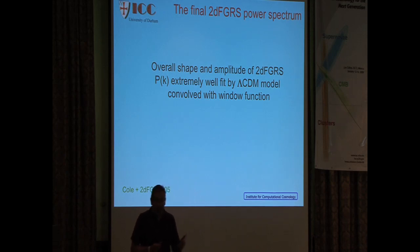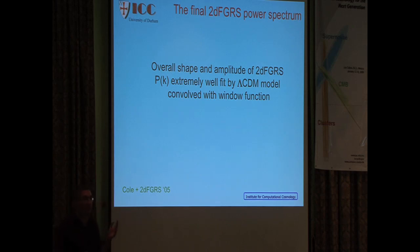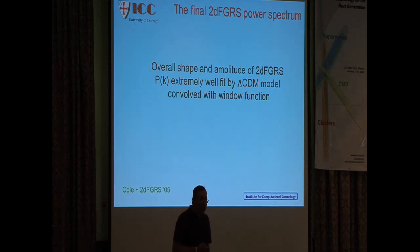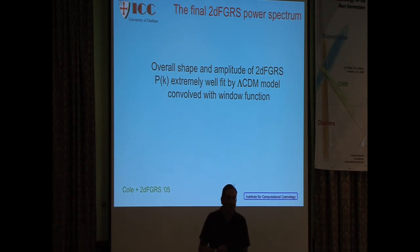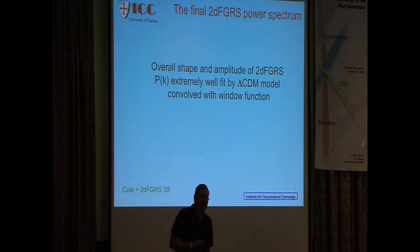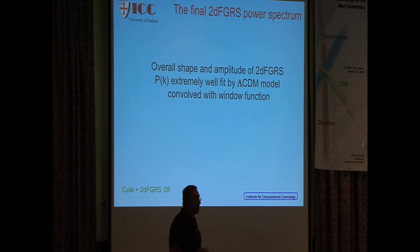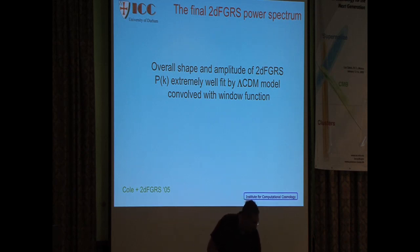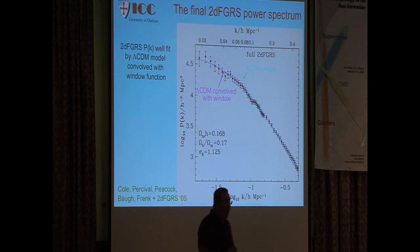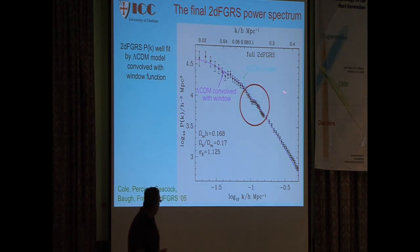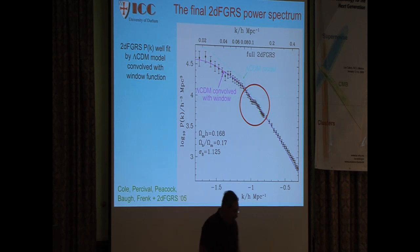The overall shape and amplitude of the 2dF galaxy redshift power spectrum is extremely well fit by a CDM model convolved with the window function. The same is true of the Sloan power spectrum once you account for systematic differences. If you just naively compare the Sloan and 2dF power spectra they completely disagree — because 2dF looks at blue galaxies and Sloan at red galaxies, and blue and red galaxies are not distributed the same way. Some very distinguished colleagues have actually fallen into that trap.